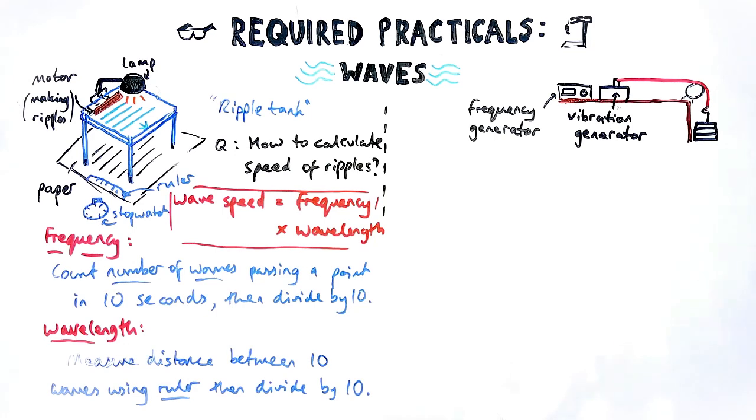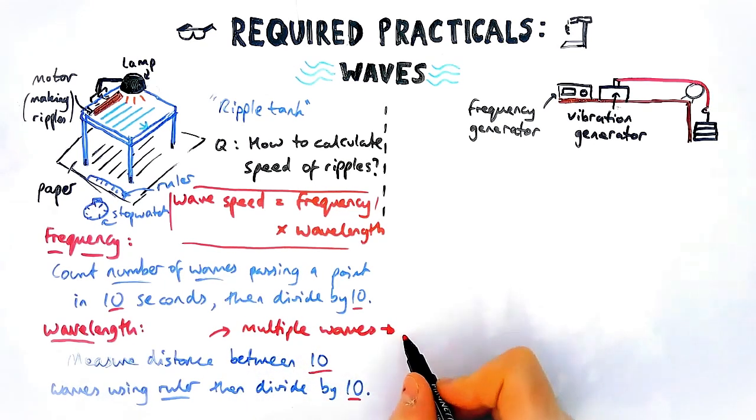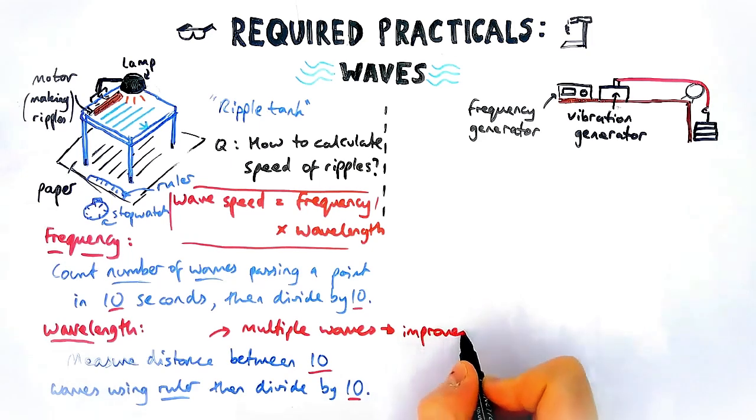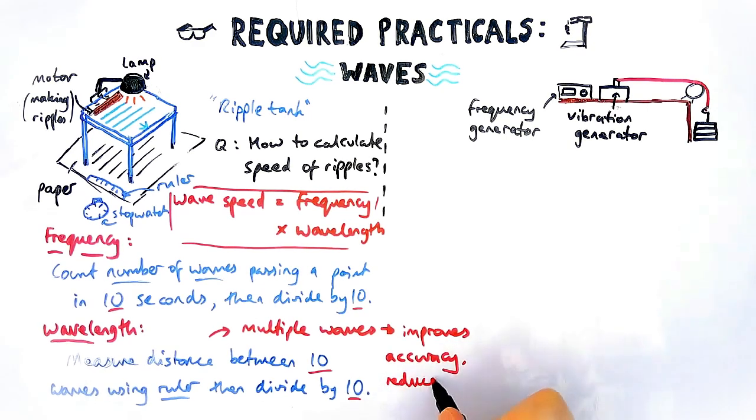What's really important, and this comes across with the vibration generator on the right as well, is that by doing multiple waves, you are improving the accuracy of your experiment. By measuring one wave, you have things like measurement error, random errors from timers, and one person can measure one wave incorrectly if it's very small on a ruler. So reducing the chances of errors.